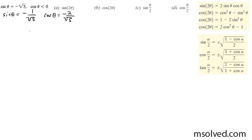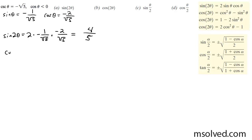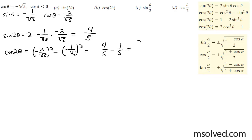Now we can go ahead and start finding our angles. The sine of 2θ is going to be equal to 2 times sine theta, which is negative 1 over √5, times negative 2 over √5, which is going to be equal to 4 over 5. And the cosine of 2θ is going to be equal to cosine squared, which is (−2/√5)² minus (1/√5)², giving us 4/5 minus 1/5, which equals 3 over 5.